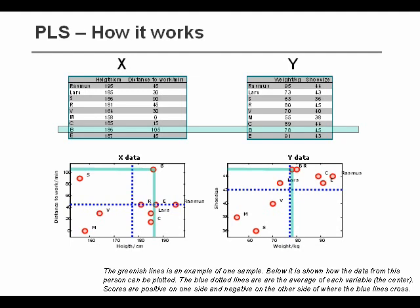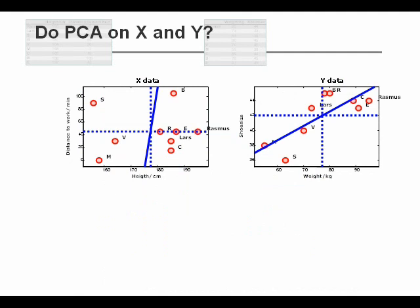So now we want to develop a model from which we are able to predict from X to Y. And we do that in PLS by taking out one component at a time. So let's start by finding the first component.